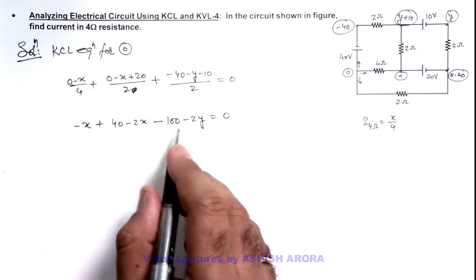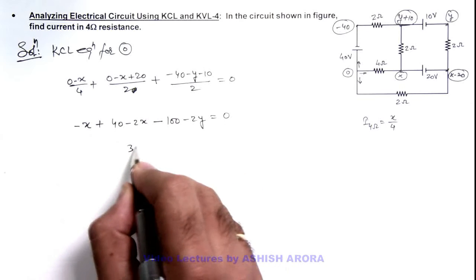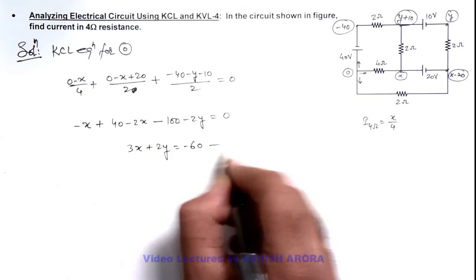If we simplify this, this will give us 3x plus 2y is equal to minus 60. Say this is our first equation.